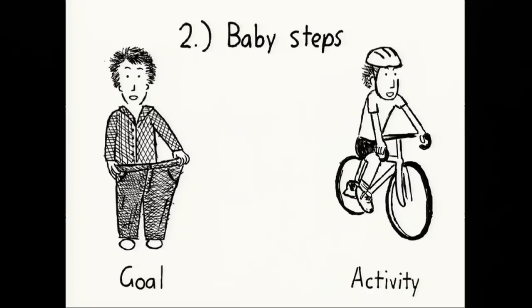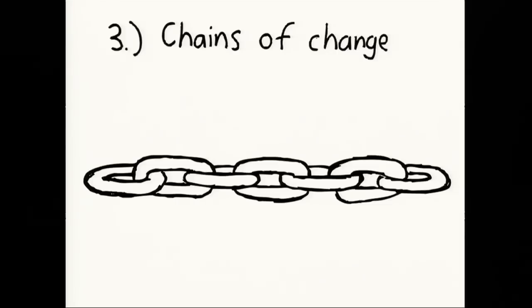The second thing is to break down your goals and make them activities. So big goals into small activities. And the reason that we take these big goals and make them into small activities is that over time, what we want to build up are these chains of change. Now, the longer that a chain of change gets, the more likely it is not to be broken. And the only way you can create a chain of change is by doing lots of small things repetitively time and time again.